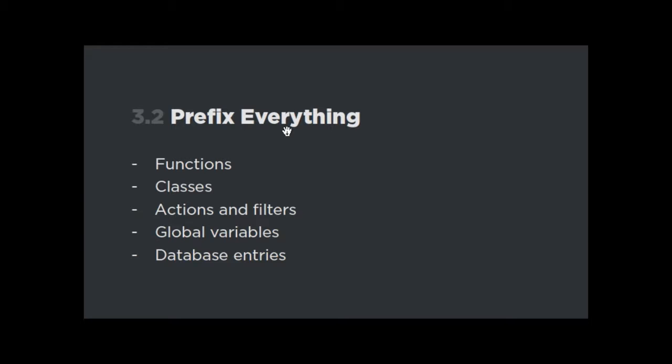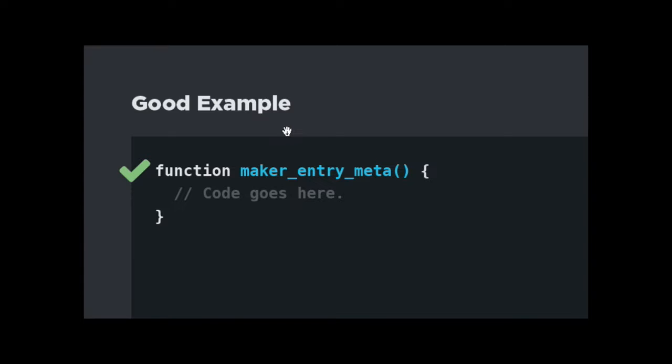Next thing: prefix everything. Let's say you have a function called 'output' in your theme. Think what will happen if you install a plugin and it has a function with the same name — a fatal error. So the best way is to prefix your functions. This will prevent that kind of conflict and will get your theme approved, not declined because of the prefixing issue.